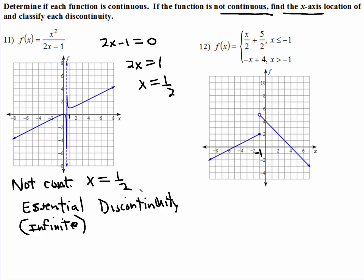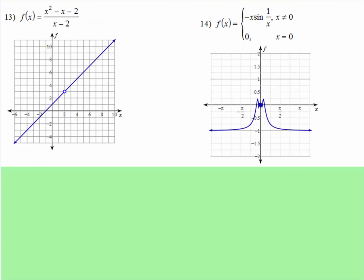So on this piecewise, obviously there's a big gap. So you're going to write out the word not continuous. You're going to tell me, and this looks like where x equals negative one, it stops being continuous. And this time you have to take a big leap or a big step. So this is either jump or step discontinuity.